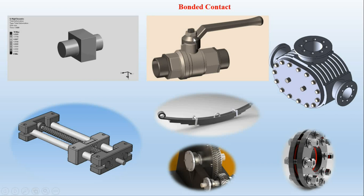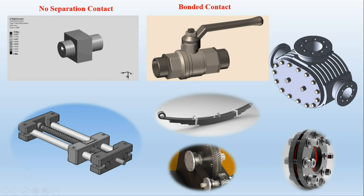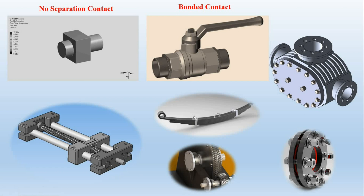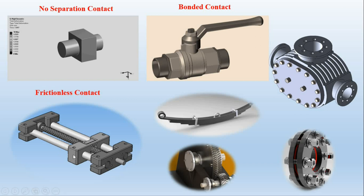Now let's discuss no separation contact. Similar to bonded, but some sliding is allowed. A square block moving on a shaft is a good example — you can define a no separation contact between the two contacting faces. Another example is a slider mechanism where a square block moves on two rods. For a linear simulation, no separation contact is appropriate; for a nonlinear simulation, frictionless contact can be used.